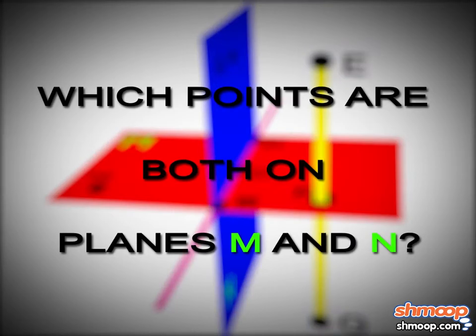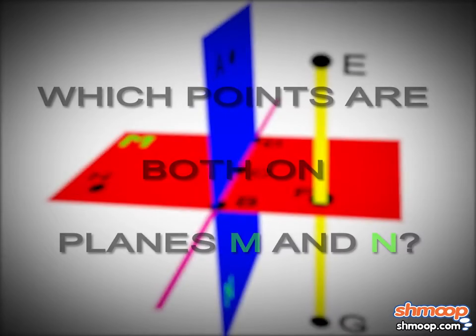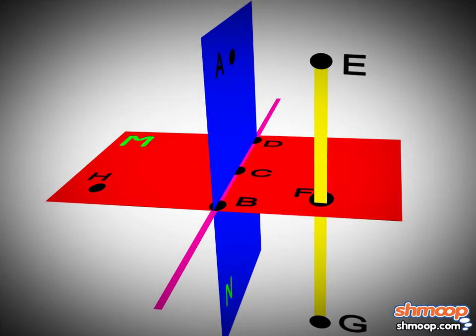Which points are both on planes M and N? For points to be on both planes M and N, they need to be contained within the boundaries of those planes in the figure. We can see that points H, B, C, D, and F are on plane M, and points A, B, C, and D are on plane N.